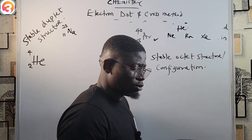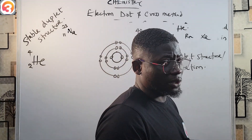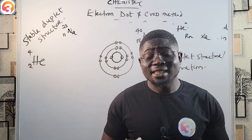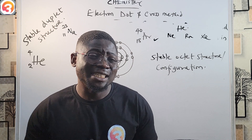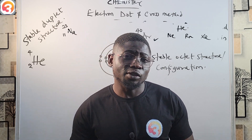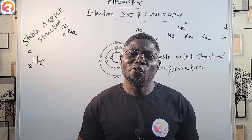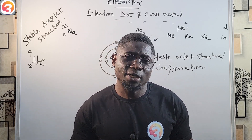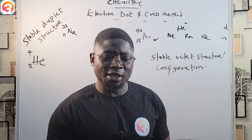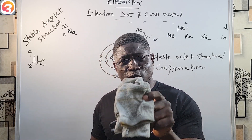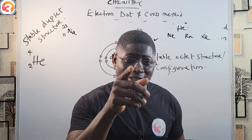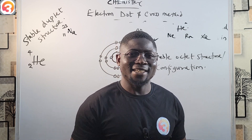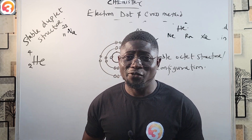This is the electron dot and cross method. In the next class, we'll be talking about the spdf method of writing electronic configuration. My name is Alabi, thank God, and I will see you in the next class — thank you for watching.